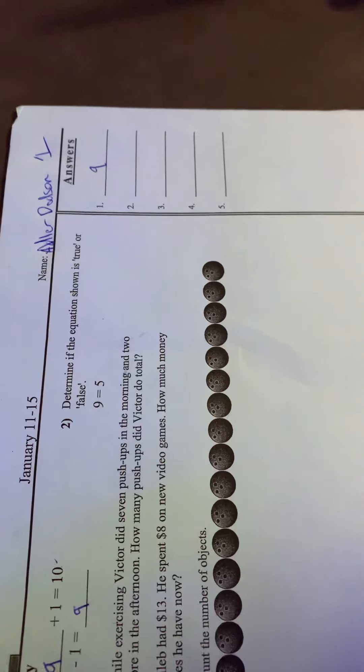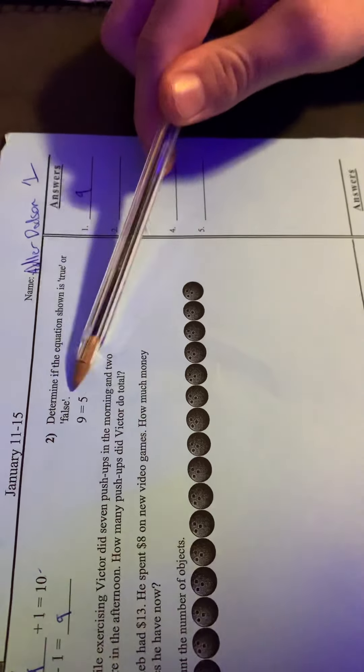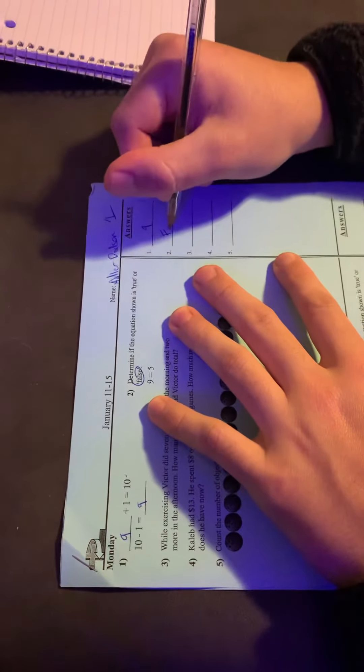Like nine equals five in what universe? None. You know what I mean? Nine doesn't equal five. Five equals five. Five doesn't equal nine. It's just not accurate. So we probably put a no, right? Or false? Yes, false. So I'm going to circle that and put big F for false on the line.